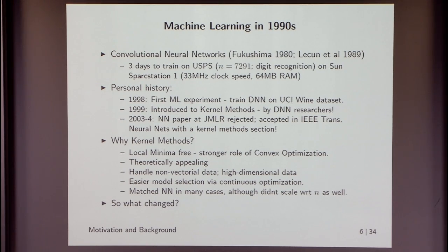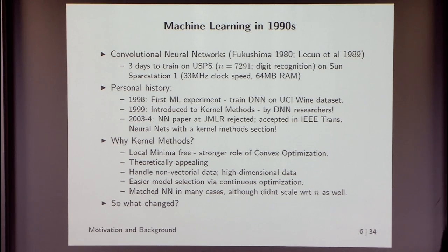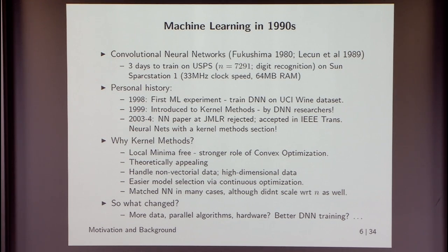Around 2012 when the deep learning wave took over, I found myself asking: what changed? Is it more data, parallel algorithms, hardware, or some fundamental statistical idea in the notion of depth together with better modern DNN training algorithms?